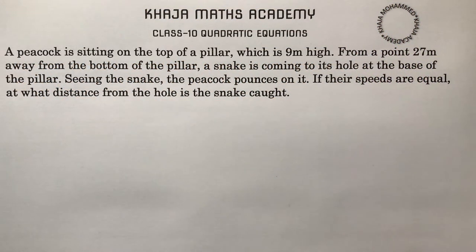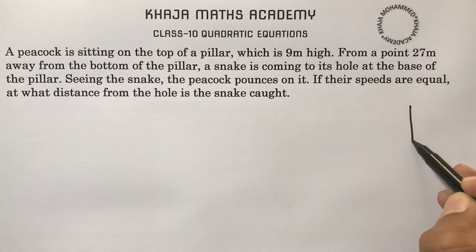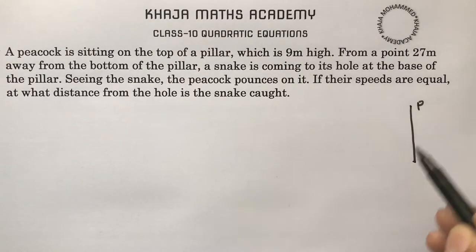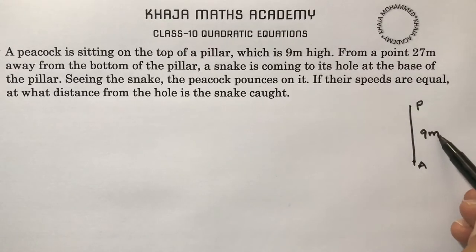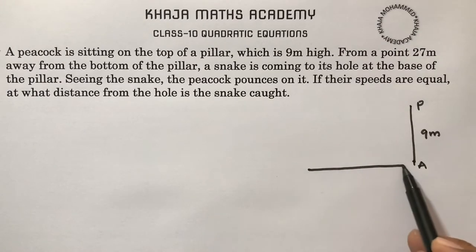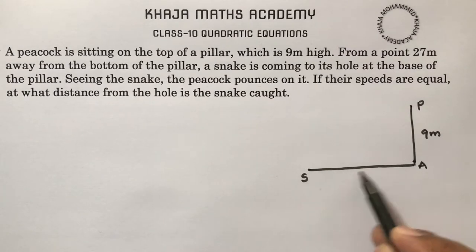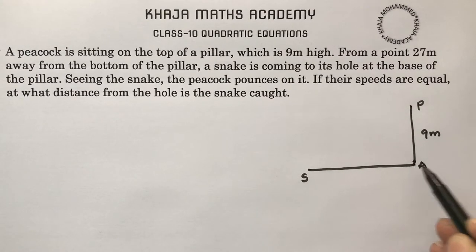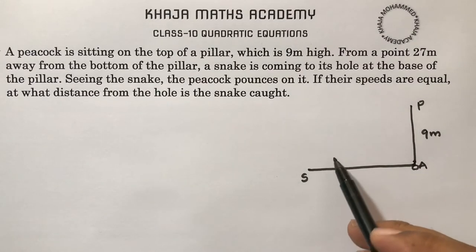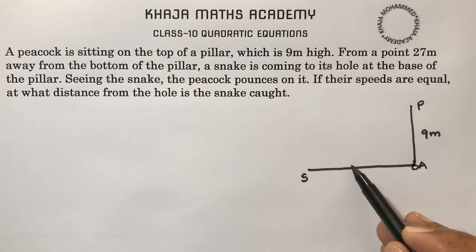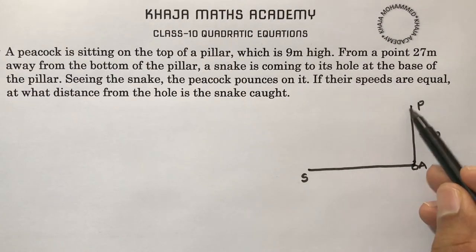A peacock is sitting on the top of a pillar which is 9 meters high. From a point 27 meters away from the bottom of the pillar, a snake is coming towards a hole at the base. Seeing the snake, the peacock pounces on it.